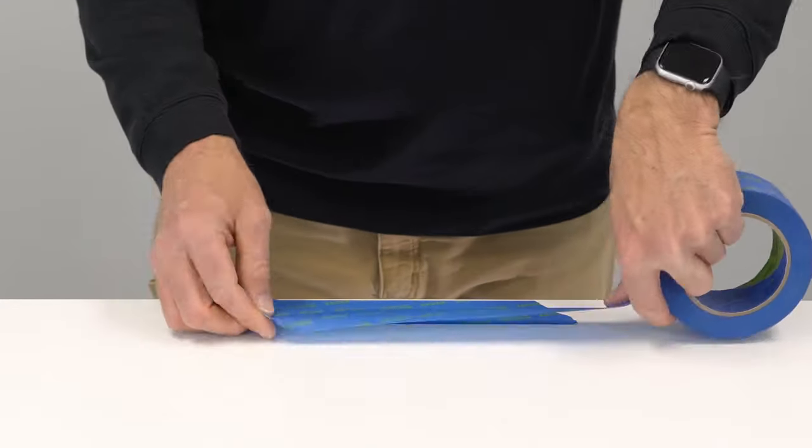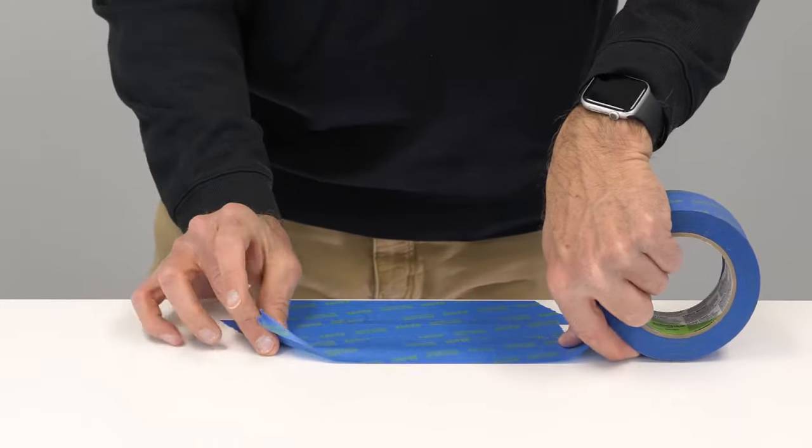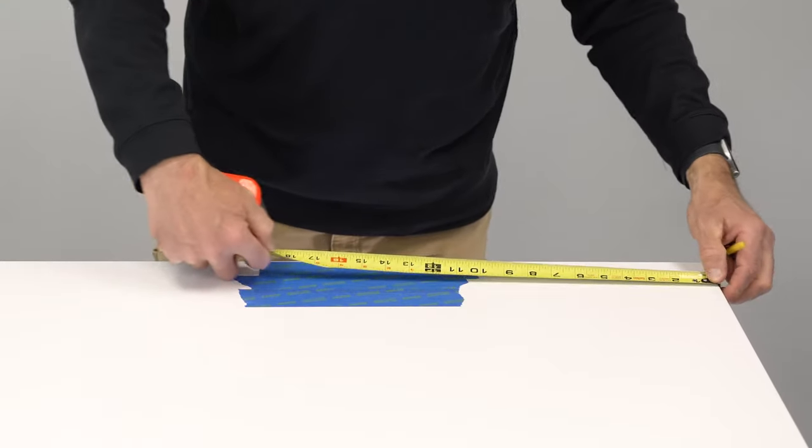Place painter's tape on the desktop where you will be drilling the grommet hole to help prevent any chipping. Mark to the center of the hole.